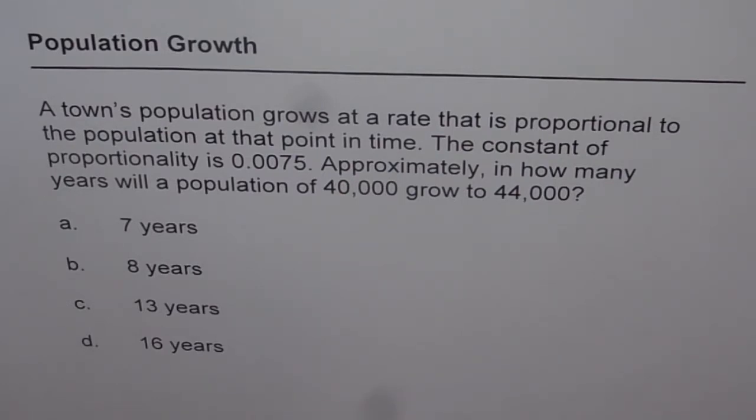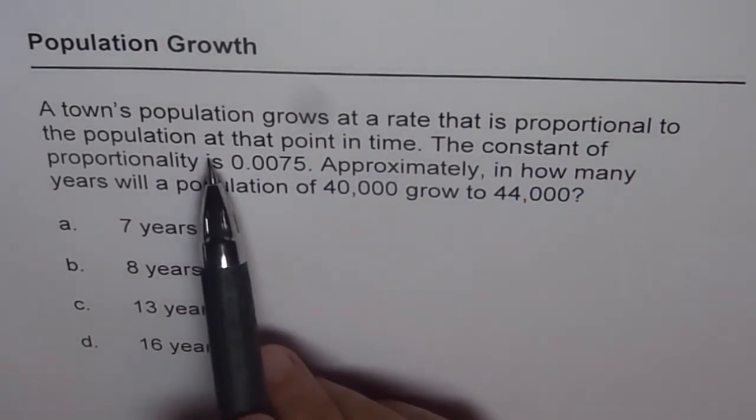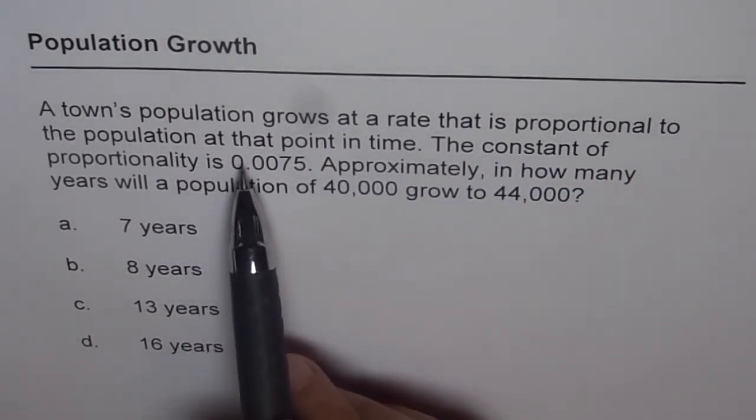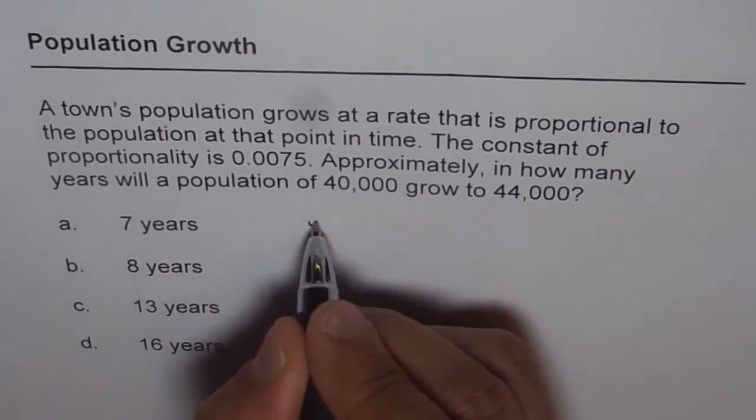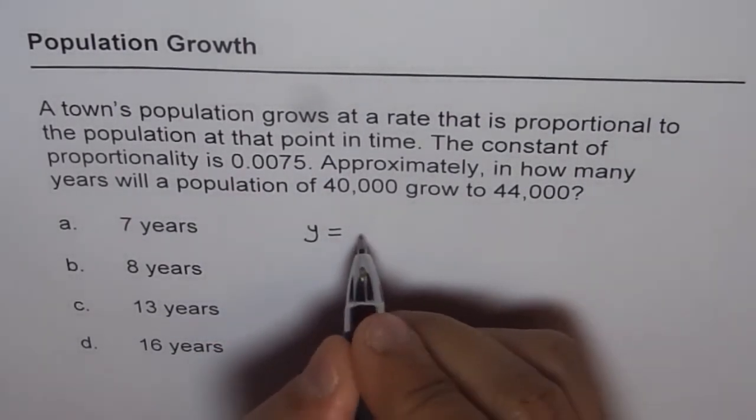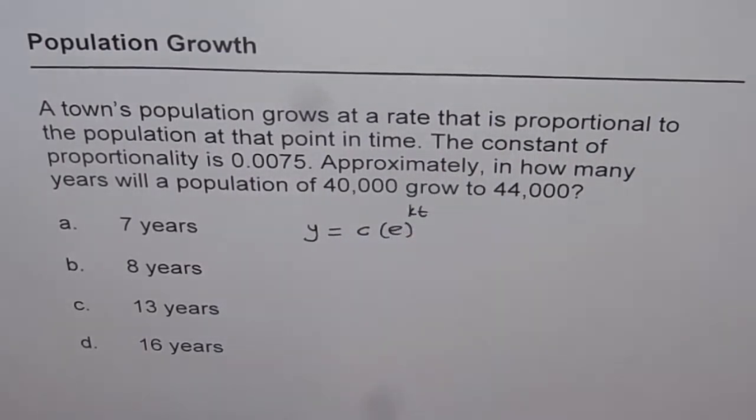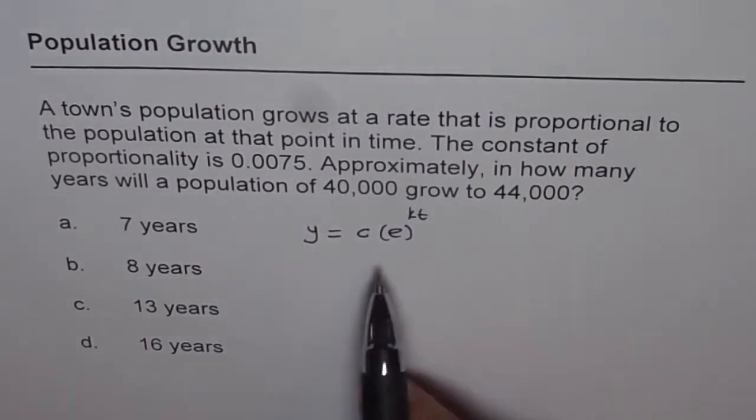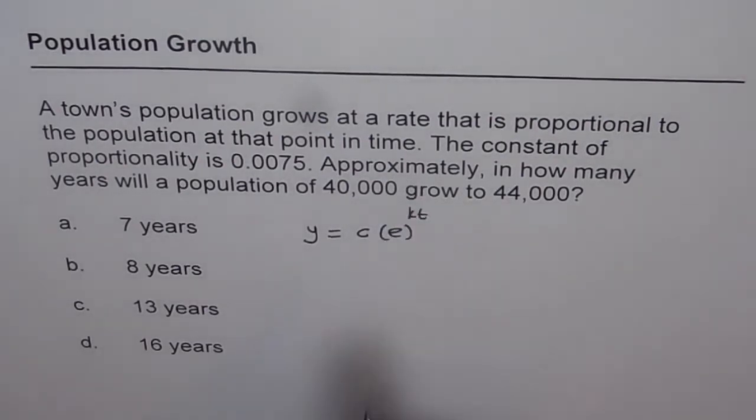Now it is important to know, when the growth rate is proportional to the population at that time, in that case we know it is an exponential function. And this function can be written as y equals to c times e to the power of kt. So that is how we can find that this is the function which is going to represent.